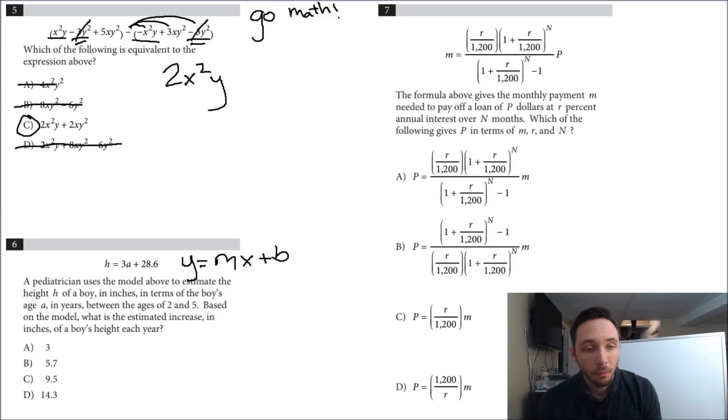It says based on the model, what is the estimated increase in inches of a boy's height each year? Estimated increase each year, that's a rate of change man. Which of these letters represent rate of change? You got your slope right here. It's just asking what's the slope. Here's the slope, and I found that that's just A, which is 3. The slope was 3, that's your rate of change. That's it, move on to number seven.